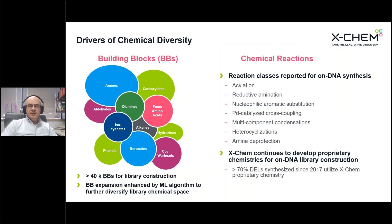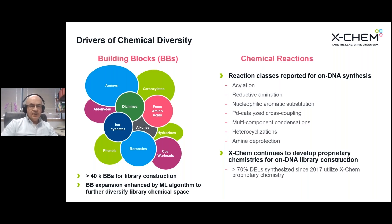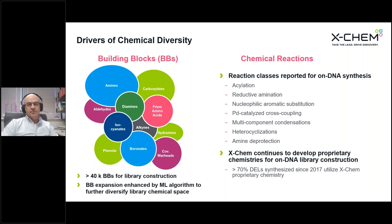The diversity that exists within the collection of all our libraries has two sources. One is the building blocks used to construct them. On the left of this slide, you can see a representation of the over 40,000 building blocks that we have here in the facility. These building blocks are present in large numbers in our collection, but some are easier to access than others — so we have, for example, large numbers of amines and carboxylates, and lesser numbers of the other categories as shown on the right.